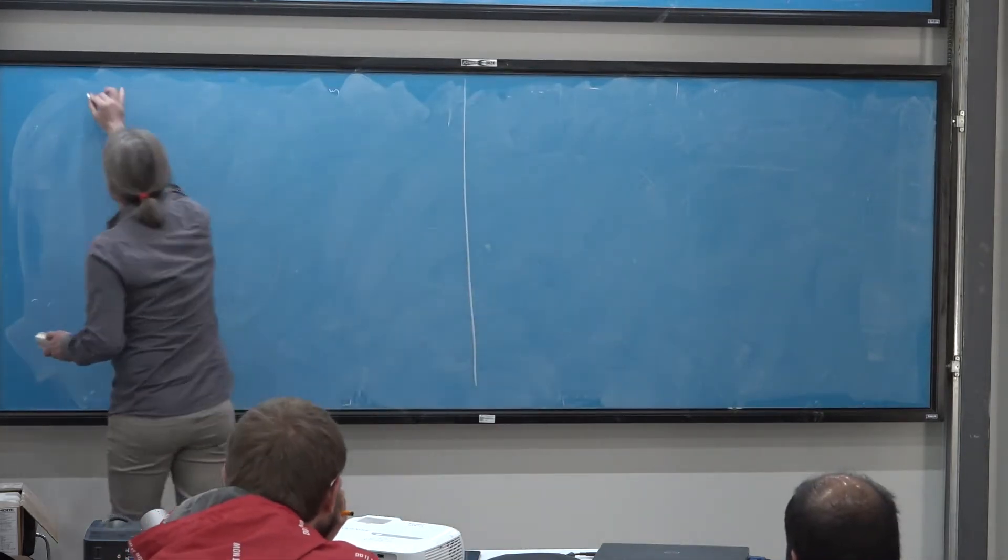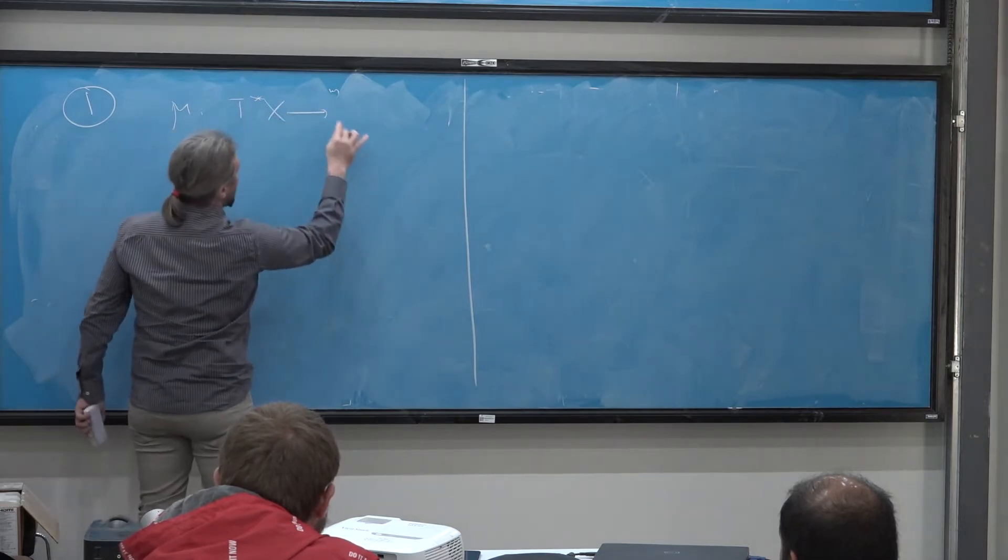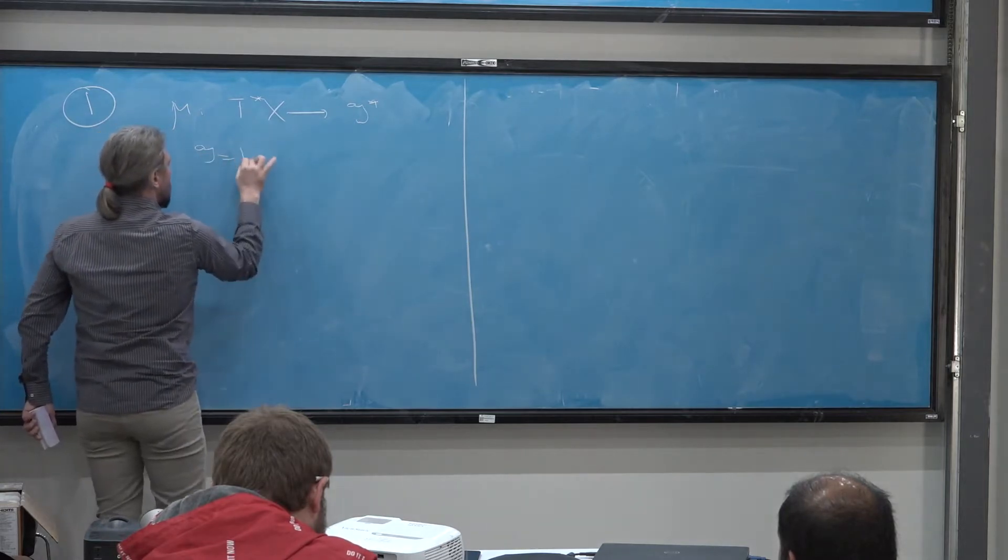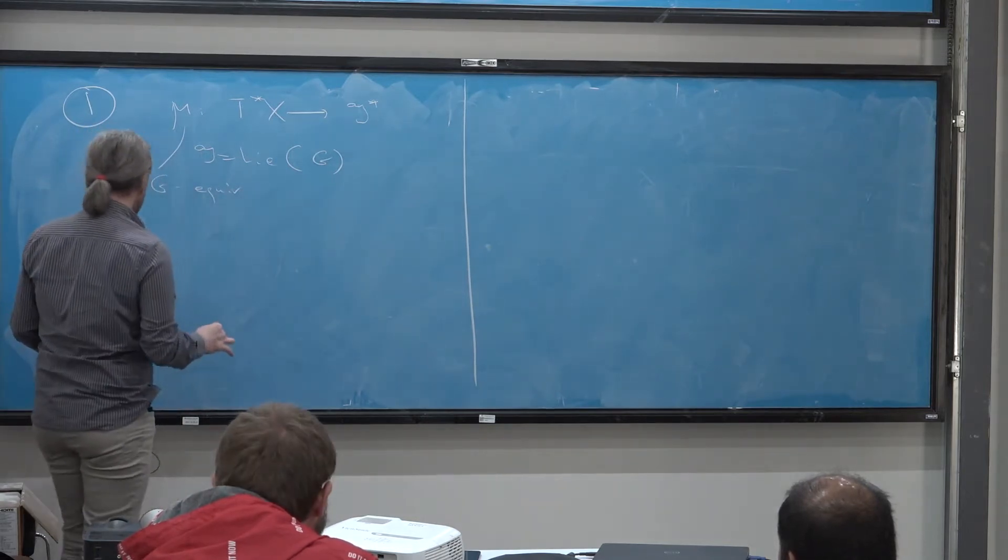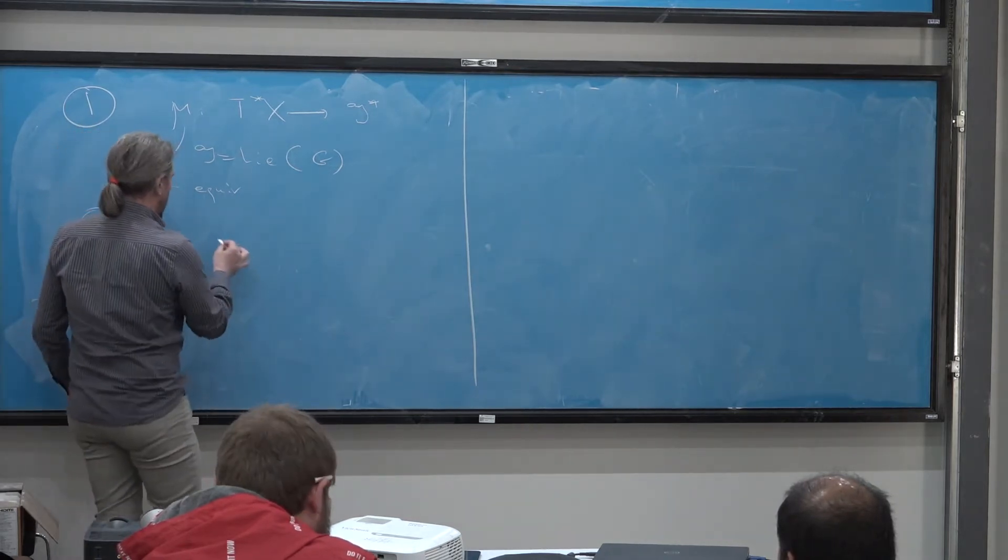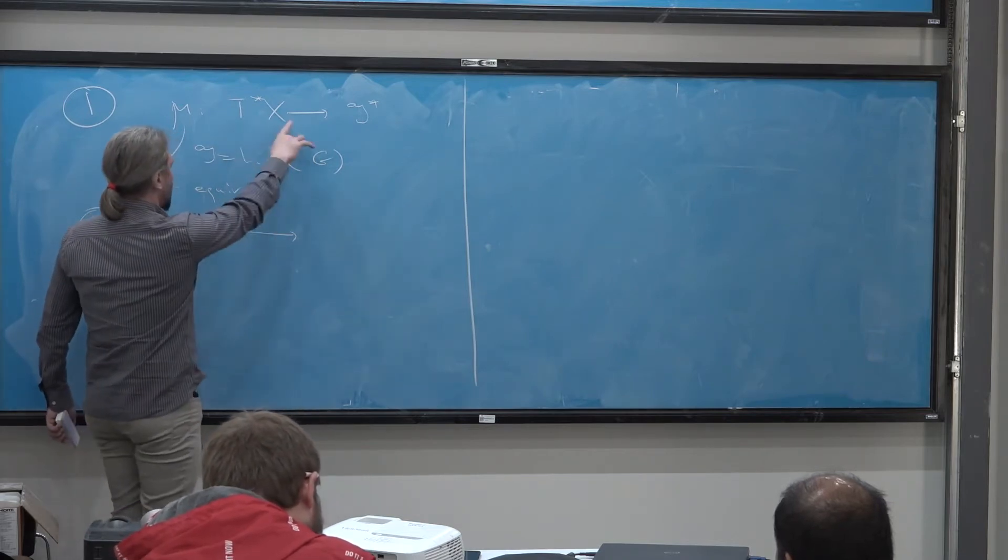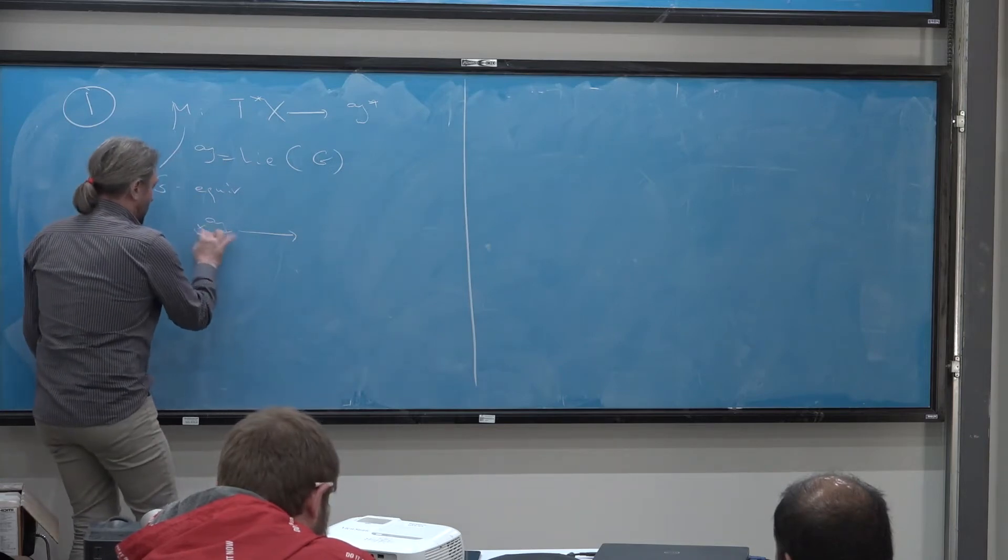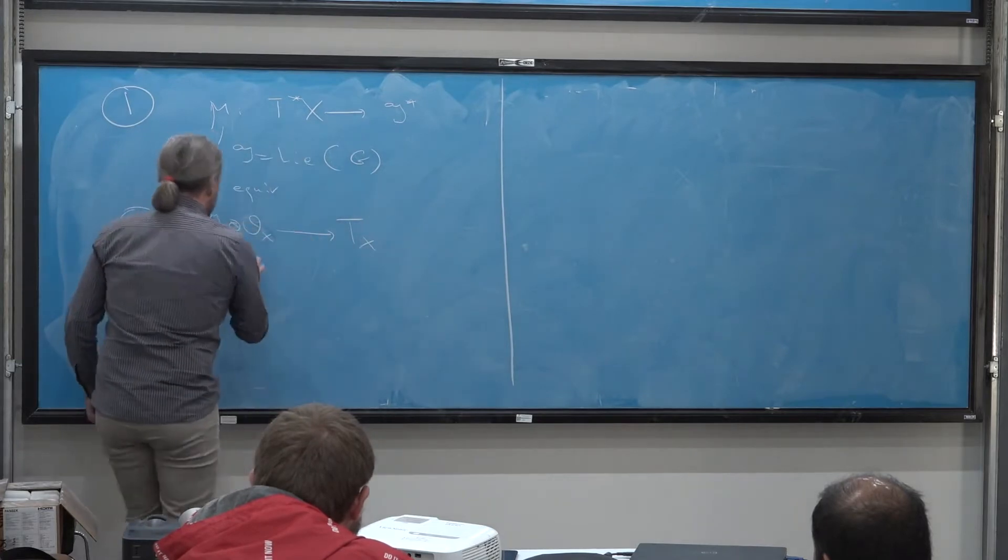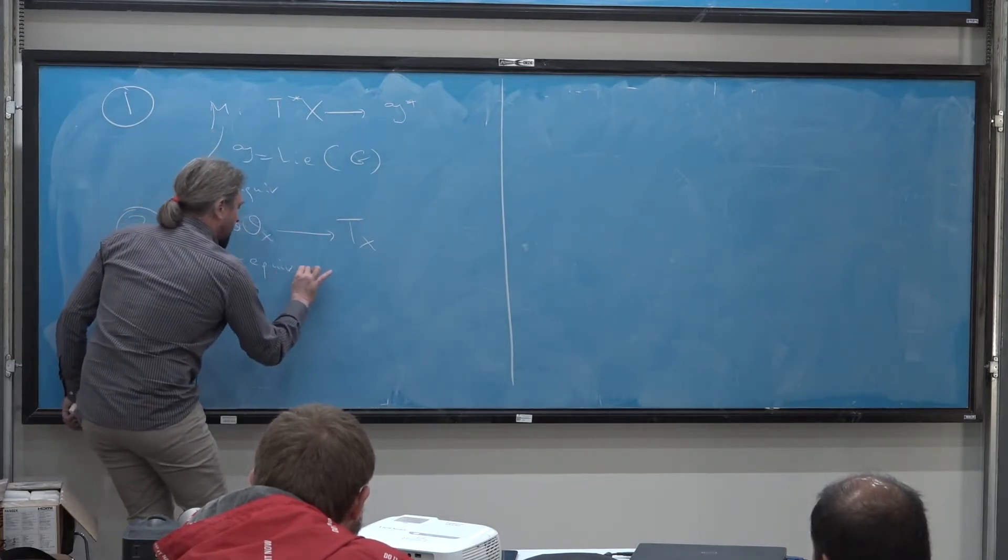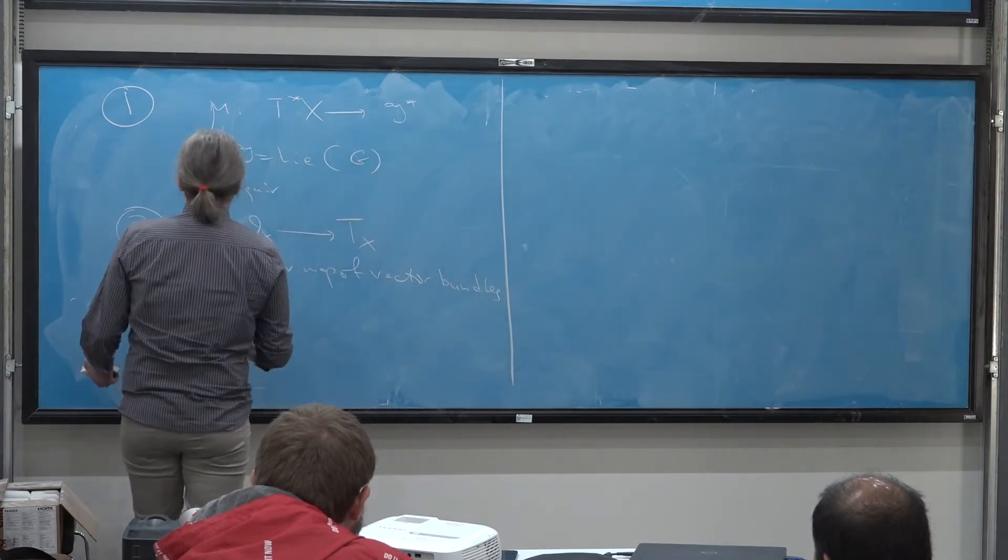So first of all, there's a canonically defined map from T star X to G dual, where G is the Lie algebra of the group G. And this map mu is G equivariant. So this is first incarnation. Second incarnation, there's a map from the Lie algebra of G to just global vector fields on X. And for me, this will be, I mean, you can organize it as a map of vector bundles, G tensor O_X to T_X. Again, G equivariant map of vector bundles.